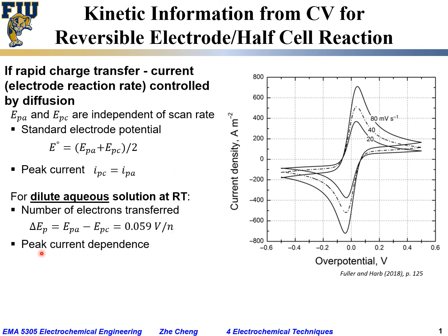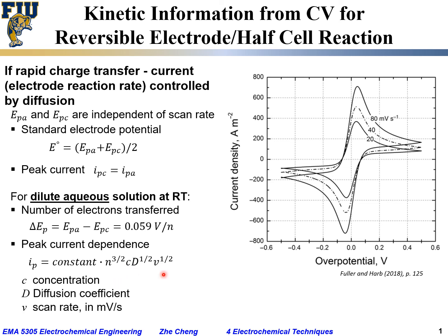For dilute aqueous solution at room temperature, the peak current depends on several things: n, the number of electrons transferred; c, the concentration of the reactant; D, the diffusion coefficient; and v, the scanning rate in volts per second. This gives us a simple relationship between peak current and these parameters, so by measuring the peak current we can deduce information such as D, the diffusion coefficient, or c, the initial concentration of the reactant or analyte of interest.